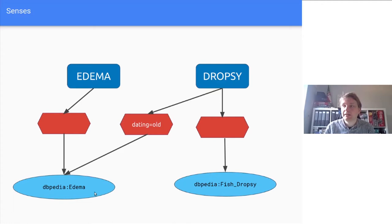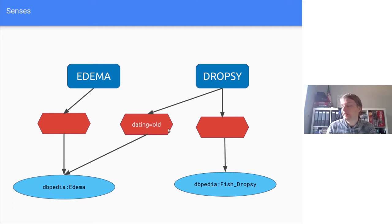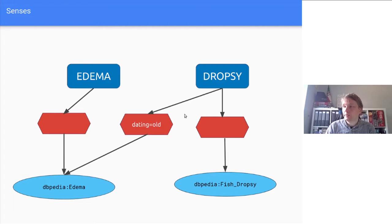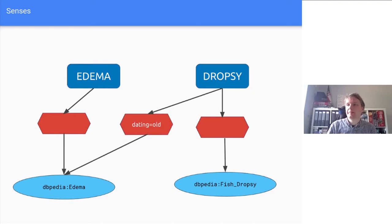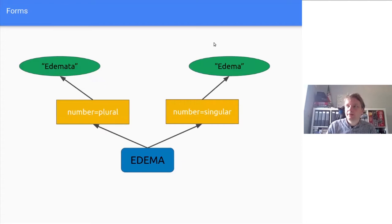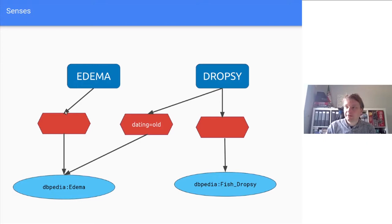Why would you want a URI for the sense? You might want to annotate that link — for example, to say that 'dropsy' is an old term, not widely used to refer to edema, and more commonly used to refer to another concept — a disease of fish. So we assign another URI that defines this concept of the sense, which is the mapping between the lexical entry and the concept in the ontology, and allows us to describe things about this mapping. When we put this all together, we have the string, a URL for the form, a URL for the entry, a URL for the sense, and a URL in the ontology — four URLs describing one string. It seems like a lot of complexity, but in practice these are very useful in modeling.